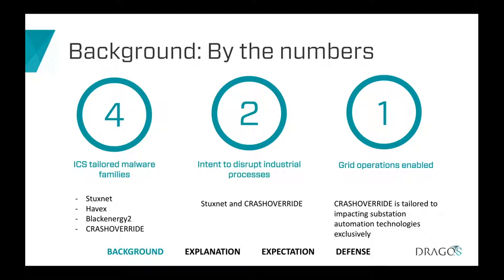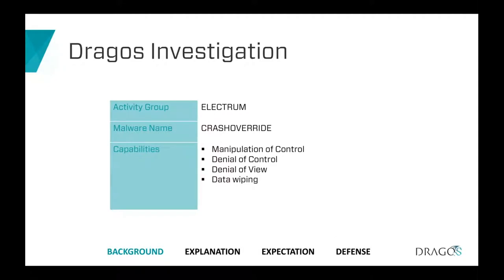The first to disrupt industrial processes was Stuxnet. What makes Crash Override especially unique is its sole focus on creating impact to electric grid operations, something never seen before. The protocol stacks it understands are entirely focused on grid operations. The Crash Override capabilities are centered on manipulation of industrial control processes, denial of control, denial of view, and a data wiping component to hamper investigations.